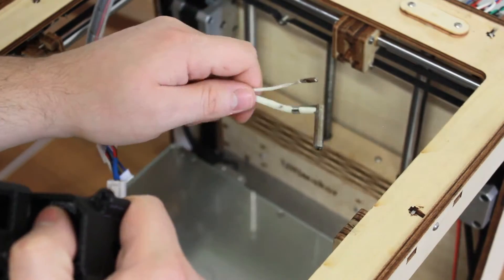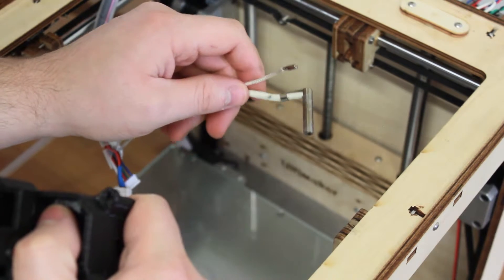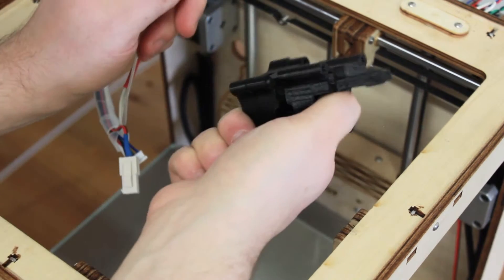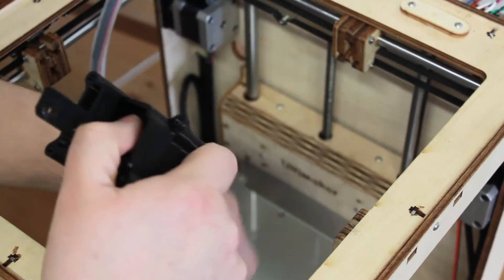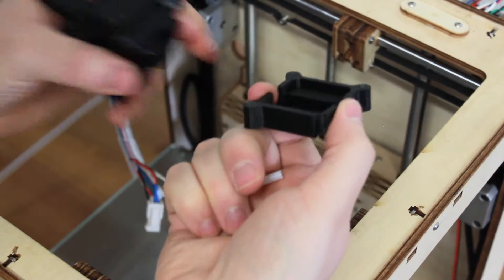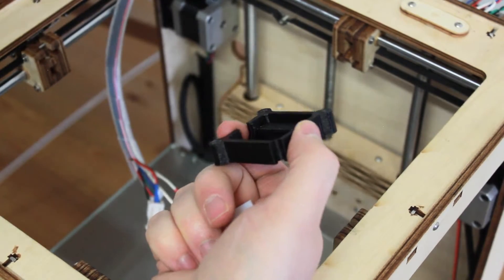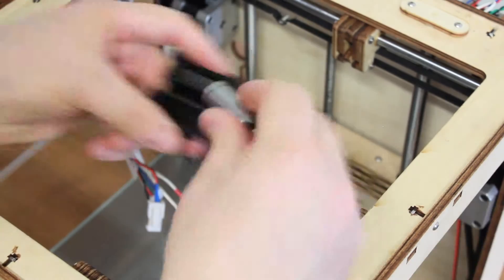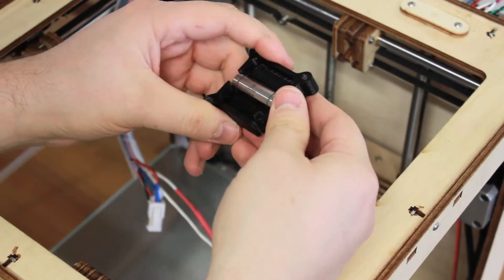Okay, so now that you remove the bearings, the thermistor, and the heater, you are ready to mount the custom bracket. First thing, you take the bottom and you put the first bearing in it like that.